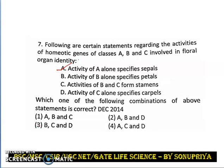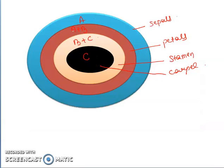From here we can eliminate the third option because it does not include statement A. Now statement B tells us that activity of B alone specifies petal. In the previous video we discussed that class B gene cannot work by itself — it needs either class A gene or class C gene for its function. Class B gene needs class A for petal formation and class C for stamen formation. So B cannot work alone.